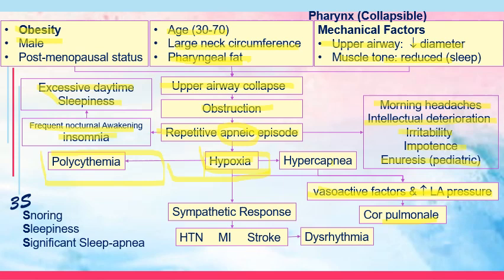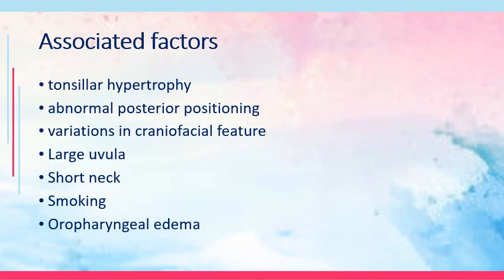Associated factors: obstruction could be because of tonsillar hypertrophy — enlargement of tonsils — abnormal posterior positioning, variation in craniofacial features, large uvula, short neck, smoking, and oropharyngeal edema. What these factors have in common is enlargement of the organ or surrounding tissues resulting in airway obstruction. The main problem again is airway obstruction, which leads to hypoxia.